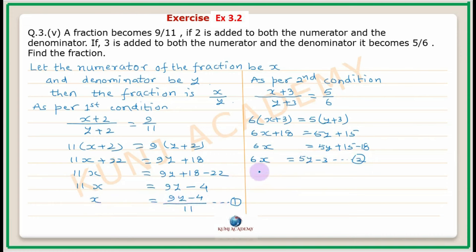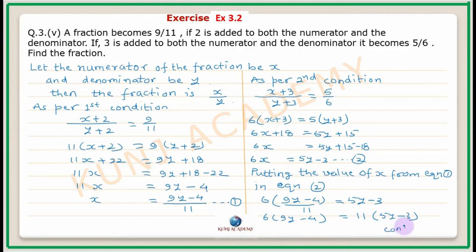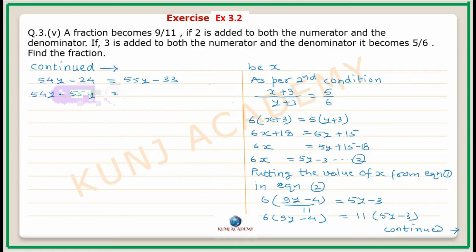Now putting the value of x from equation 1 into equation 2. After substitution and simplification: 6 into (9y minus 4) upon 11 equals 5y minus 3. This gives 54y minus 24 equals 55y minus 33, so minus y equals minus 9, therefore y equals 9.